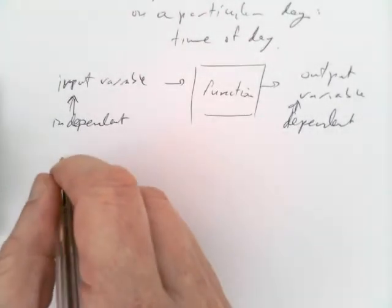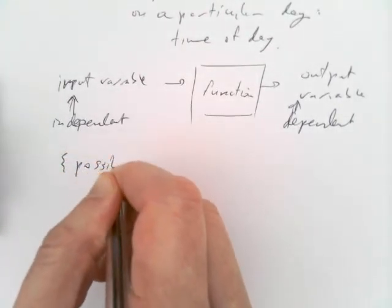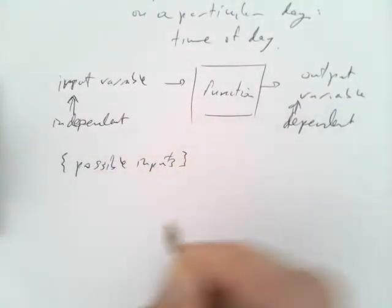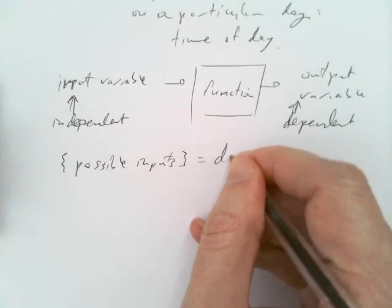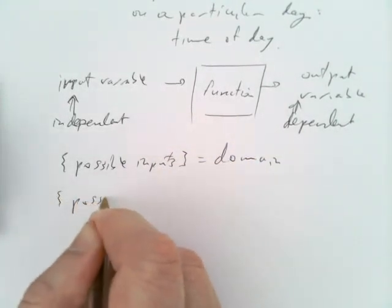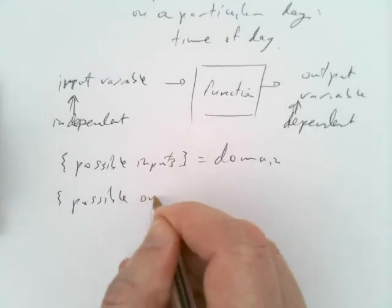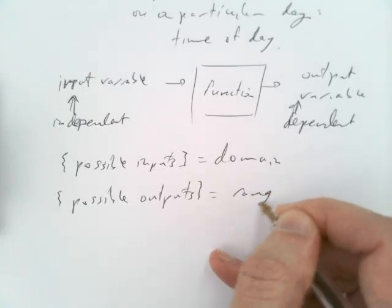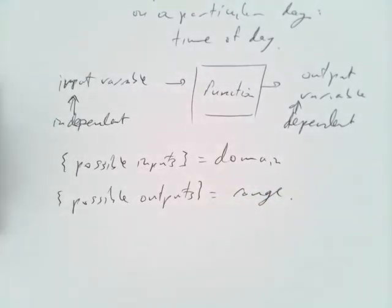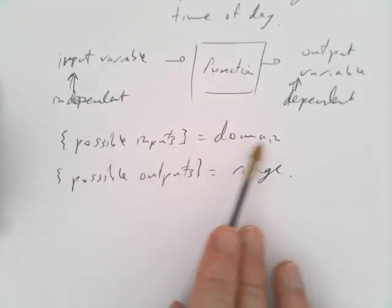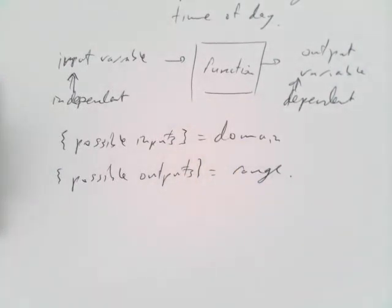All right, the set of possible inputs, the ones that are allowed for that function, is called the domain of the function. And the set of all possible outputs is called the range of the function. For us, most of our functions are going to be having an input that's a number and an output that's a number. So the domain and range will usually be intervals of the real number line.